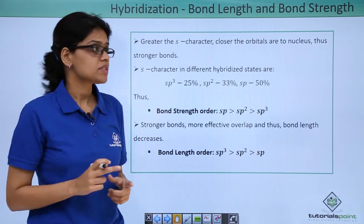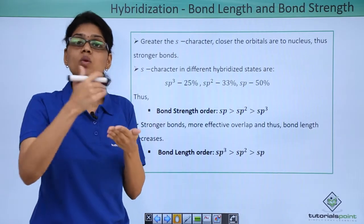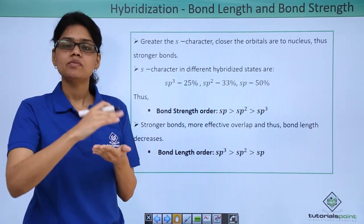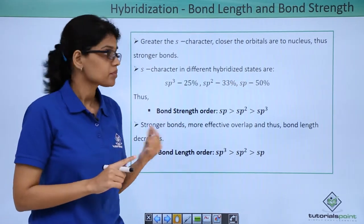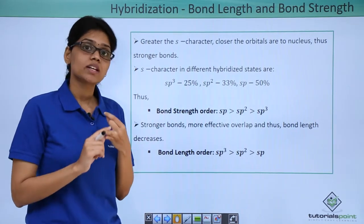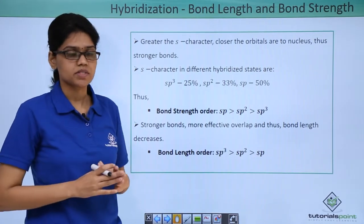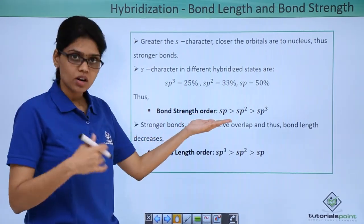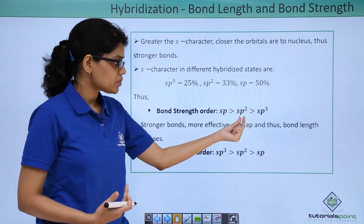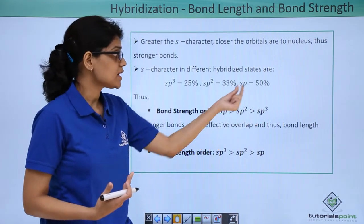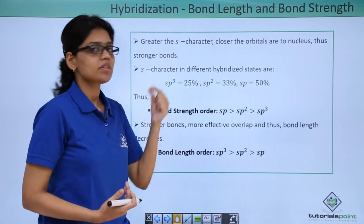Why is sp strongest? Because the s orbital lies closest to the nucleus and the effective bond formed will be much stronger. We know that sp hybridization is involved in alkynes, sp2 hybridization is involved in double bonds, and sp3 hybridization is involved in saturated systems. Based on that, the bond strength order is: sp > sp2 > sp3, because sp has 50% s character, sp2 has 33%, and sp3 has 25%.